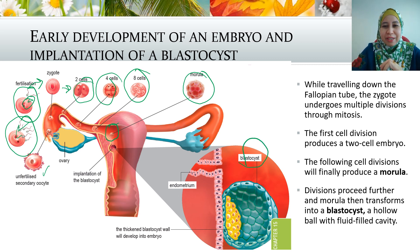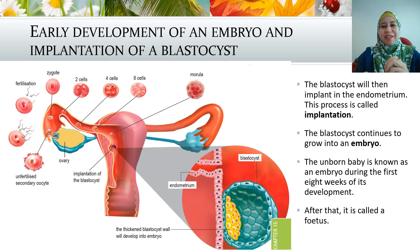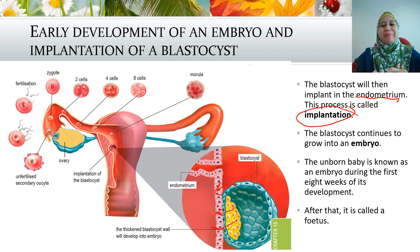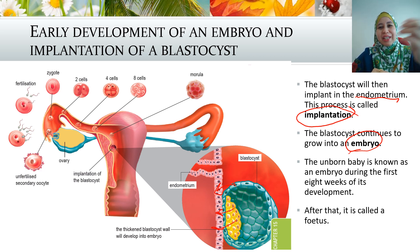The blastocyst is a hollow ball — you can see it is hollow — filled with a fluid-filled cavity. The blastocyst will then implant itself in the endometrium. When the blastocyst successfully implants into the lining of the endometrium, that process is called implantation. The blastocyst continues to grow into an embryo. The unborn baby is known as an embryo during the first eight weeks of development, and from the ninth week onwards, we call it a fetus.